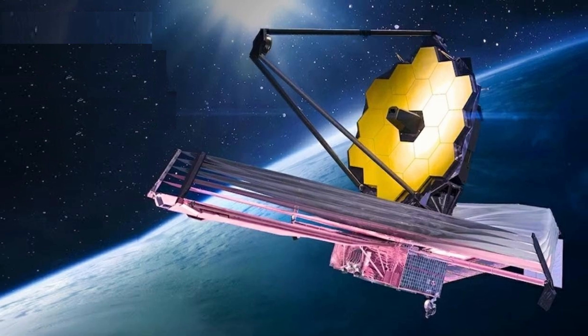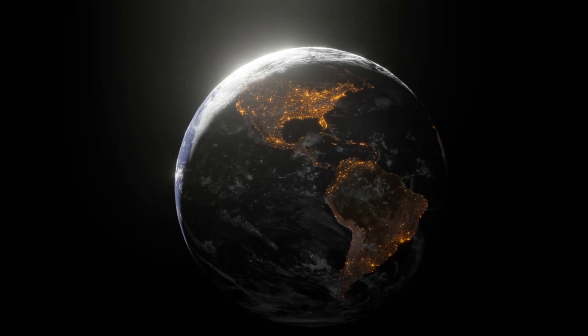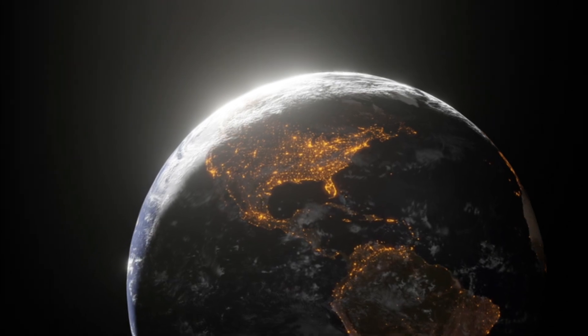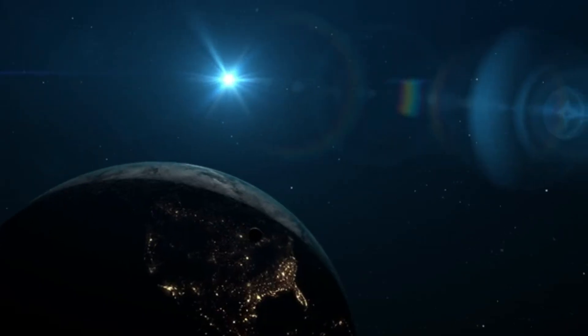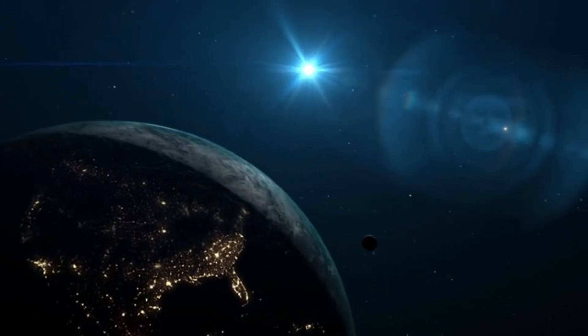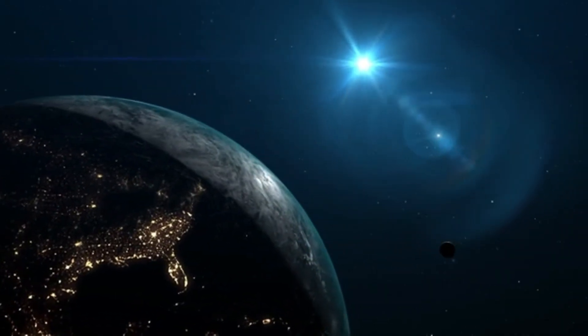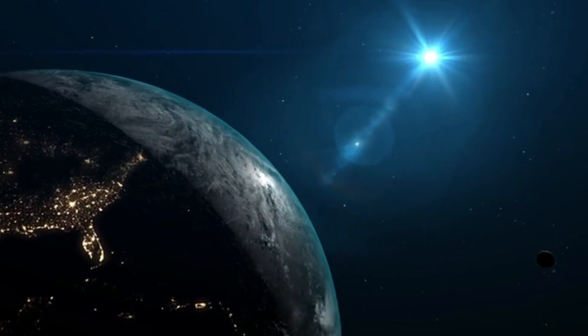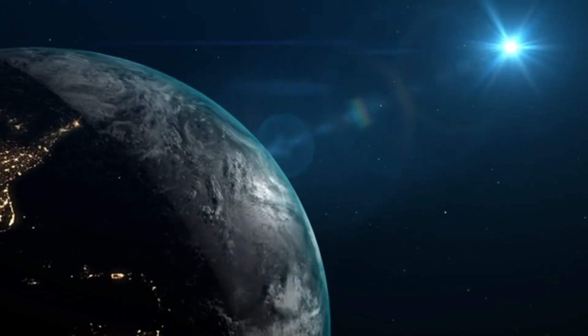The telescope detected unusual faint lights on the night side of Proxima Centauri b, a planet located about four light years from Earth. These lights resemble the glow of city lights and have sparked speculation that they could be the result of artificial alien technology.